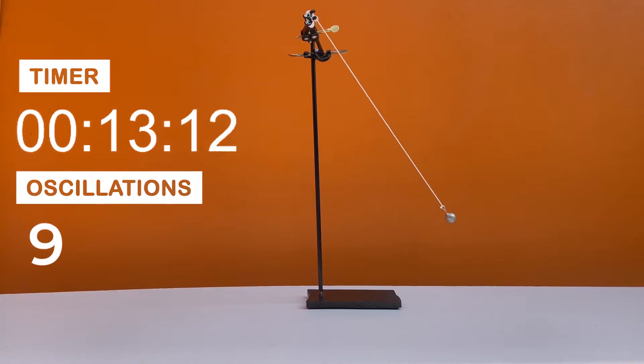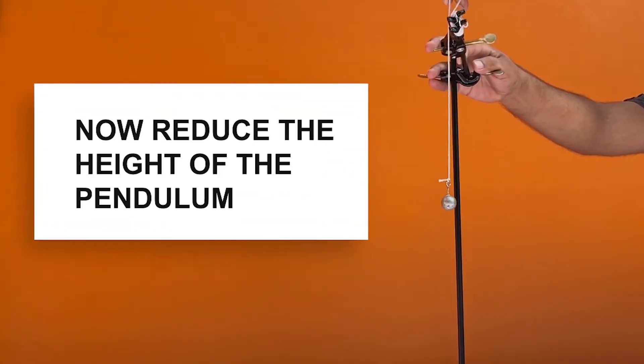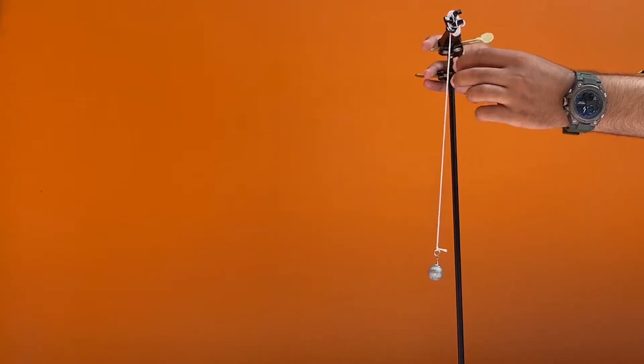A pendulum exhibits simple harmonic motion, which allows us to measure the gravitational constant by measuring the periods of the pendulum.